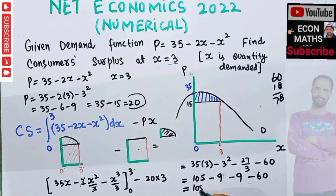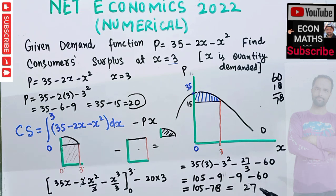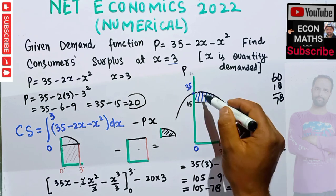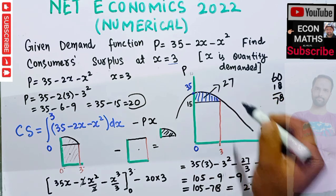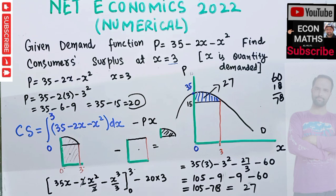So the consumer surplus is 27. This is how we use the definite integral to find the consumer surplus of a nonlinear demand function. I hope I made myself clear in this video. Thank you.